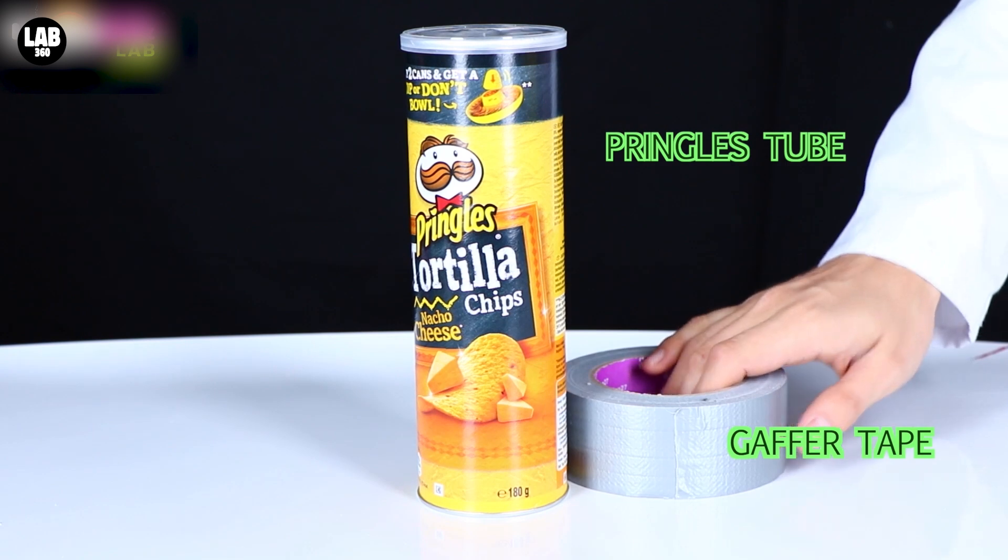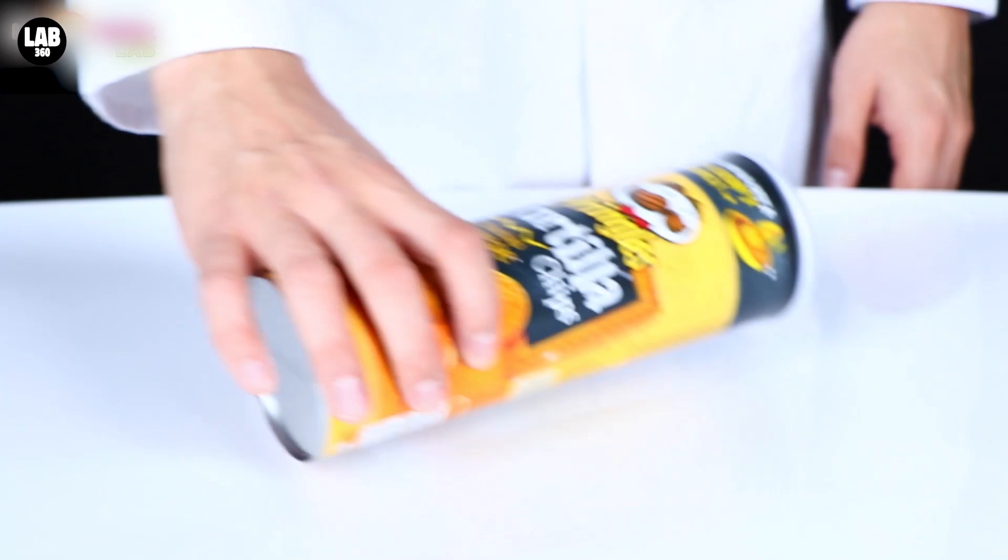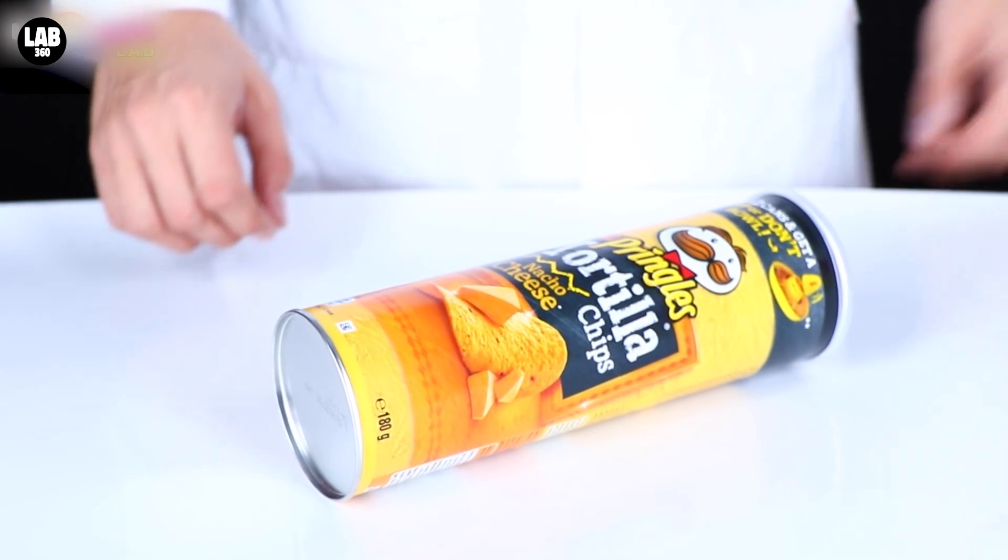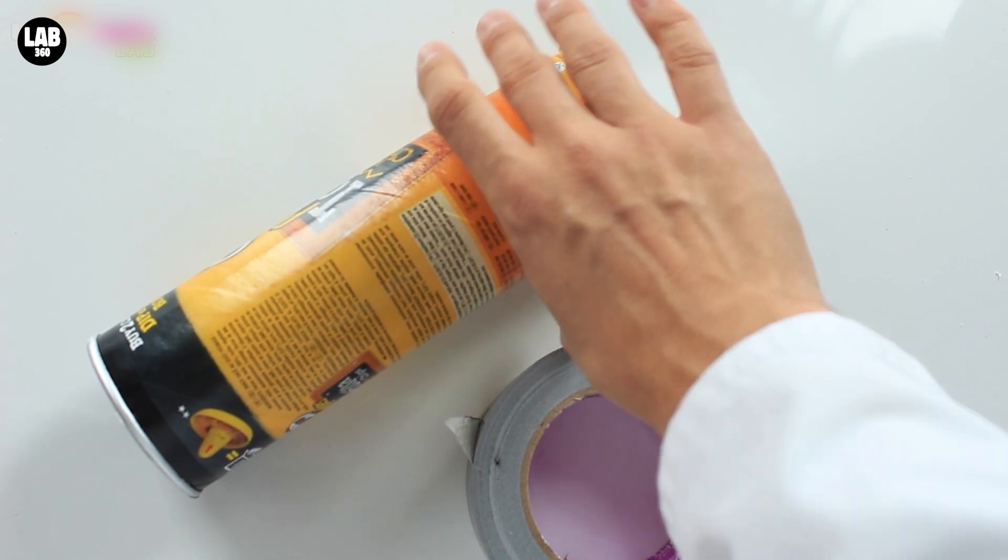You'll need a Pringles tube, some gaffer tape and a Stanley knife. Take your tube and cover it with tape, like so.